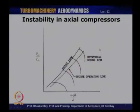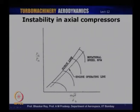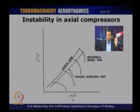Let us quickly go through the compressor map once again, as we discussed in one of the earlier lectures, and try to understand what are the different limits that I have been talking about. Here is a typical multi-stage compressor map. On the y-axis we have the pressure ratio, and on the x-axis is the corrected mass flow rate — m-dot times square root of theta over delta, where theta is the temperature ratio and delta is the normalized pressure ratio.